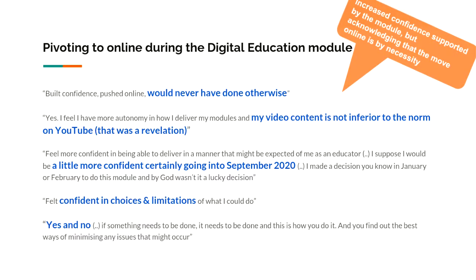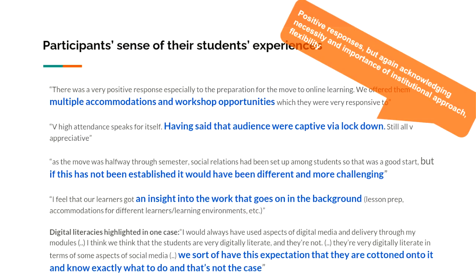When we asked them about pivoting to online during the module, we did see them commenting on having increased confidence supported by participating in the module. But the move online was by necessity — it wasn't by choice — and they wouldn't necessarily have moved online without the pivot. But they did feel more confident in the choices they were making, with comments like 'I didn't think my stuff was inferior to what I was seeing' and feeling more confident going into September. So a little bit of a mixed response, but confidence is there, perhaps more so than learning particular skills.